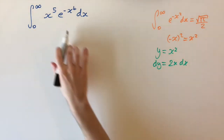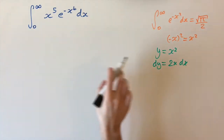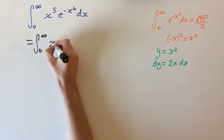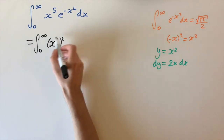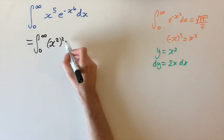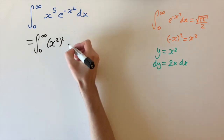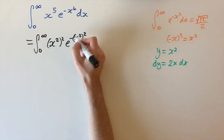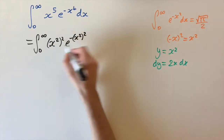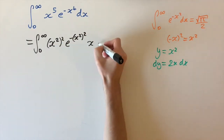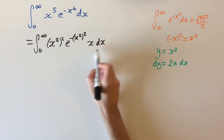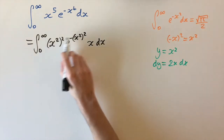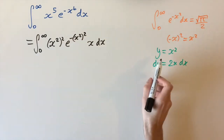Before applying the substitution, let's rewrite the integral slightly. We have the integral between 0 and infinity of x squared squared — contributing x to the power of 4 — times e to the minus x squared squared, with the remaining x dx factor. Now we can see that x dx is replaced by dy over 2, and the remaining factors of x squared are replaced by y.